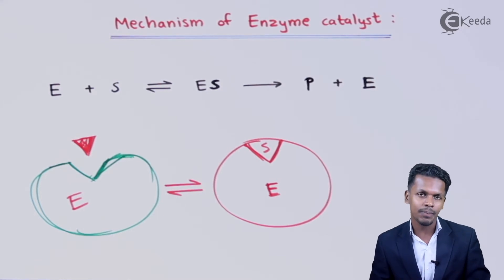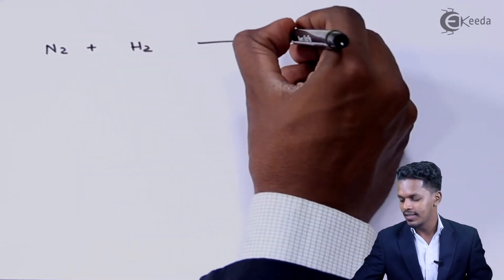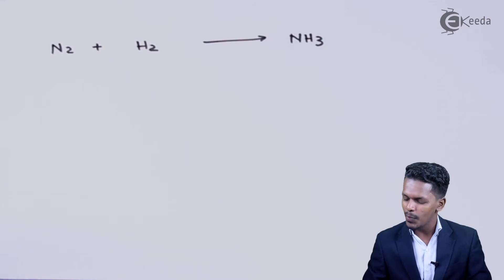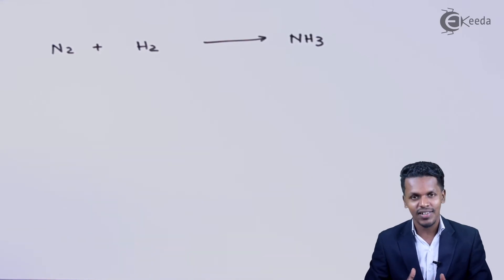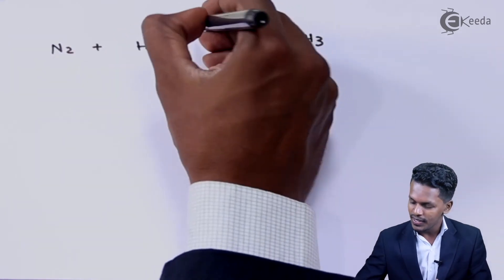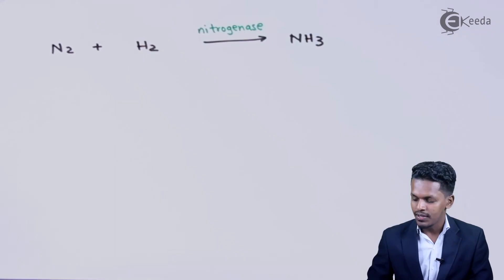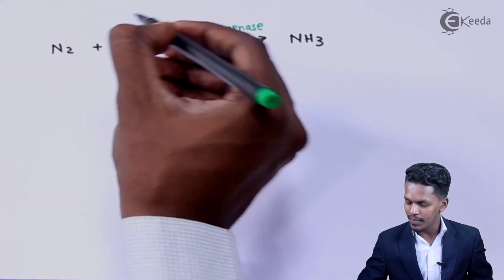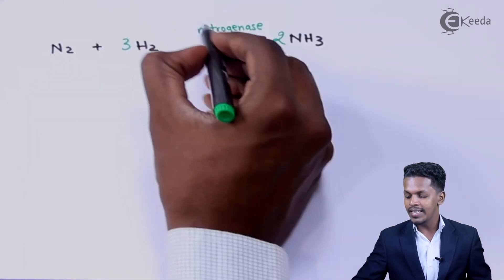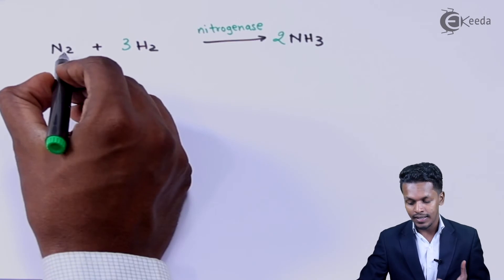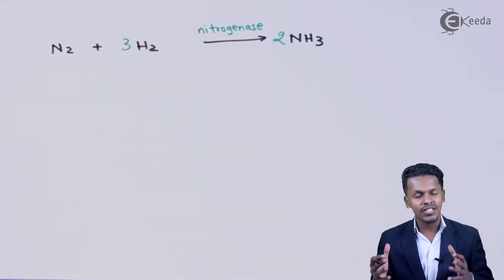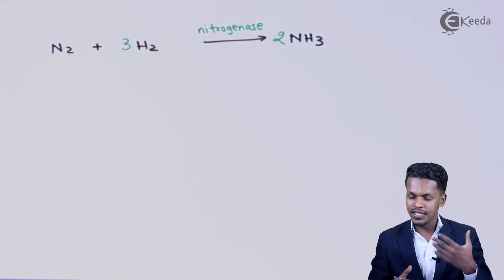Let me discuss a few more examples to understand how enzymes are specific in nature. Suppose we have nitrogen reacting with hydrogen to form NH₃. This reaction is possible in the Haber process using different catalysts, but using a biological catalyst — an enzyme — we use nitrogenase. The enzyme nitrogenase is very specific in nature, and that is how the ammonia molecule is formed from gaseous N₂ and gaseous H₂.